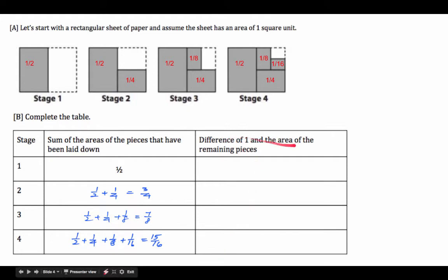Now, we're looking for the difference of one in the area of the remaining pieces. So what we have here is one minus the laid out, which is half, so which gives you half. In stage two, the white part right there, what's remaining, is one minus three quarters, which gives you one quarter. So that's like a half of a half. In stage three, it's one minus the seven eighth, which is one eighth. So that represents one half of a half of a half. And the last one is one half of a half of a half of a half. Or we could simply say one minus the sum, which is fifteen over sixteen.